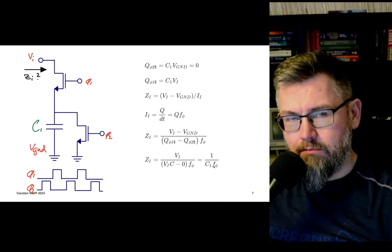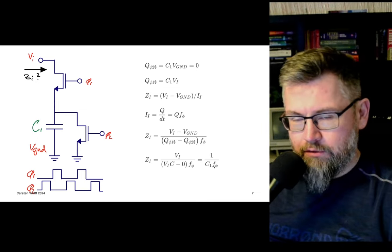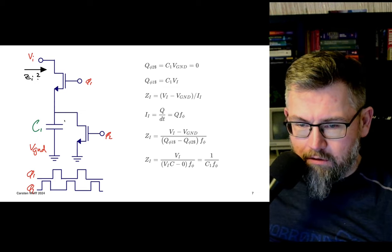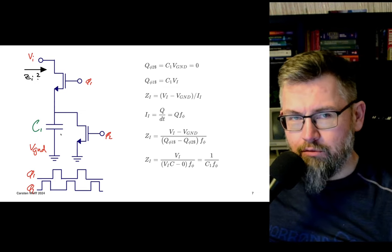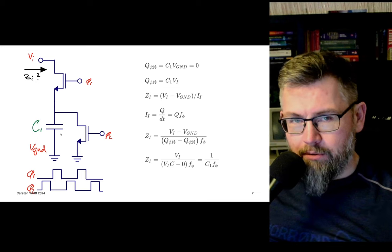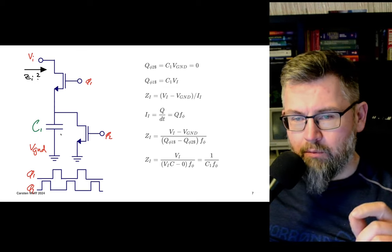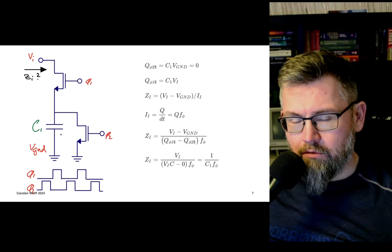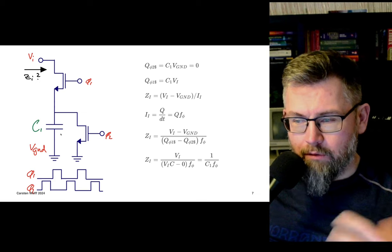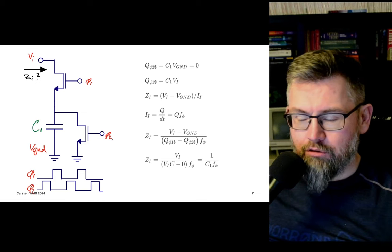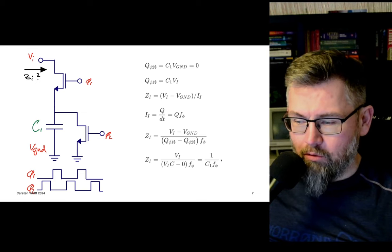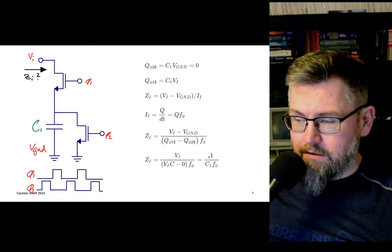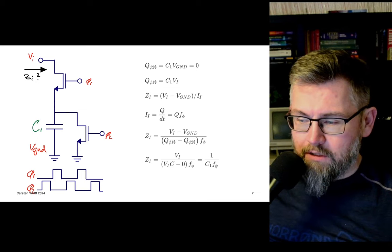This should make intuitive sense: if we charge C1 to the voltage every period and then dump that charge to ground every period, the average impedance should be 1 over C1F.